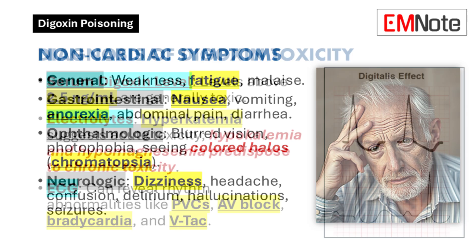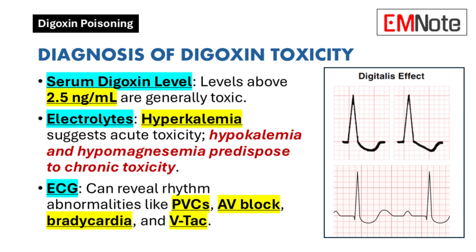Diagnosing digoxin toxicity requires a comprehensive approach, considering the patient's history, symptoms, and lab findings. We measure the serum digoxin level — levels above 2.5 nanograms per milliliter are generally considered toxic. However, there's an important caveat: if we draw levels too early after ingestion, they might be falsely elevated. We need to wait at least six hours after ingestion for an accurate assessment.